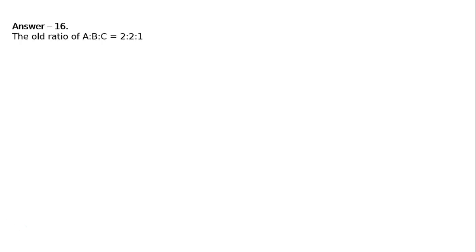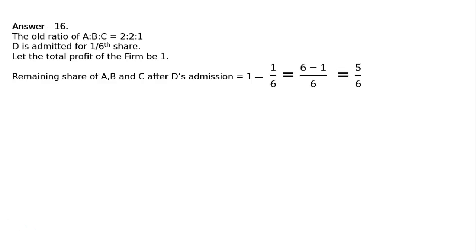Answer: The old ratio of A:B:C is equal to 2:2:1. D is admitted for 1/6 share. Let the total profit of the firm be 1. Remaining share of A, B, C after D's admission is 1 minus 1/6. Taking LCM 6, that is 6 minus 1 = 5/6.